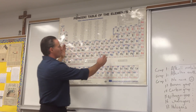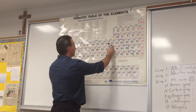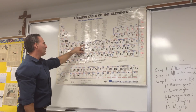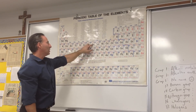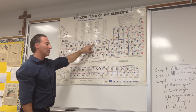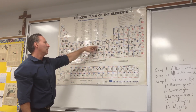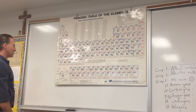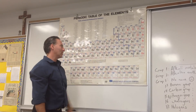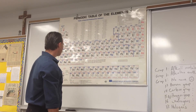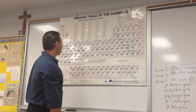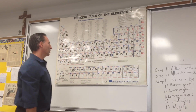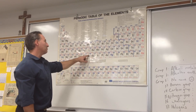This whole section is called the transition elements. The reason they're called transition elements is because many of their properties are variable — some of them will have multiple oxidation states. For example, iron will take on a +2 or sometimes a +3 charge; we call it ferrous or ferric. Cobalt will do the same. The transition elements form a lot of polyatomic ions where they're the central atom — for example, permanganate — and a lot of oxygen-based polyatomic ions because of those multiple oxidation states.